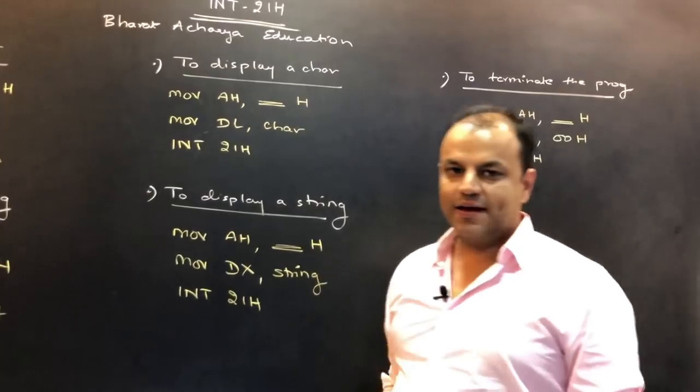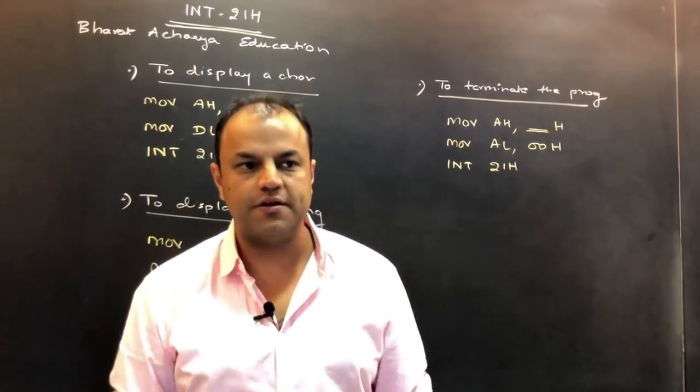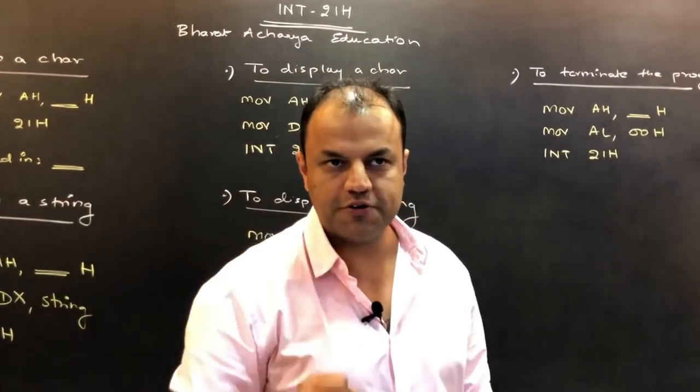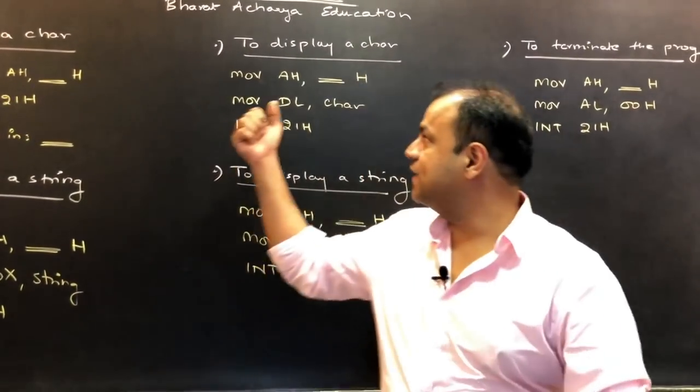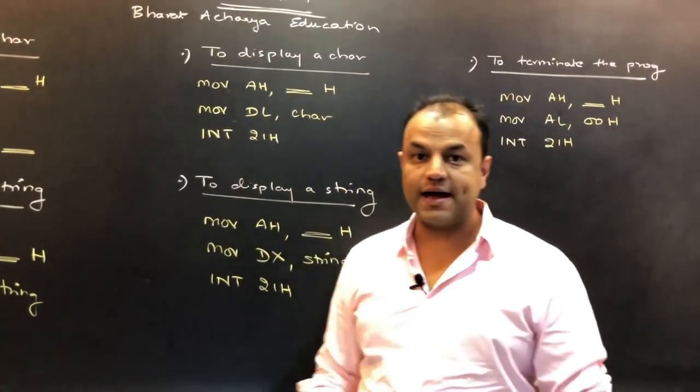Similarly, to display a character and to display a string, again, you've added two numbers, now you want to display the result. The result is a value that you want to send out on the screen. For that, you use INT-21. That is a single value. For that, we use the function display a character.